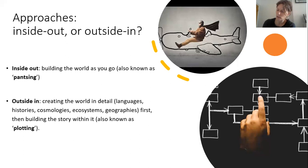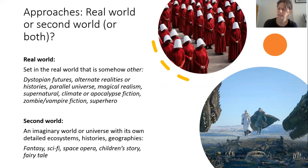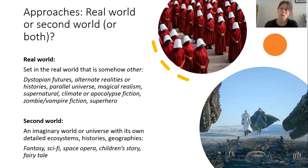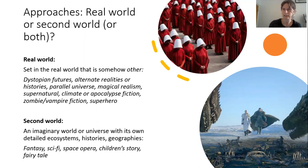Another thing to consider when building your story world is whether you want it to be a real world story or a second world story. A real world story, as the name implies, is set in the real world, but some elements of it are different from our own — they are somehow other. This is common in dystopian futures, alternate realities and histories, and parallel universes. Whereas a second world story is set in an entirely different fictional world or universe, with its own histories, its own geographies, and its own cultures — though those histories and cultures can be based on real world ones.